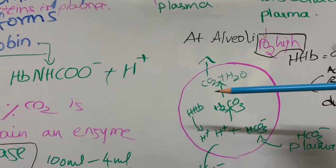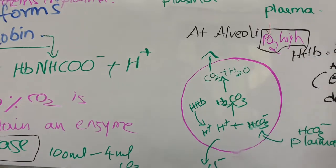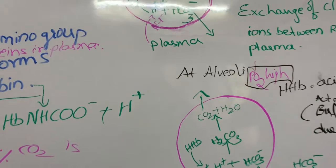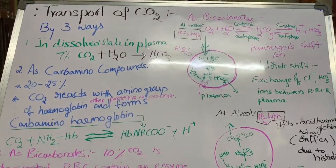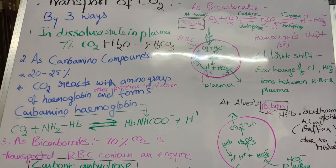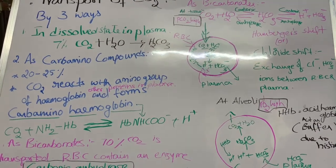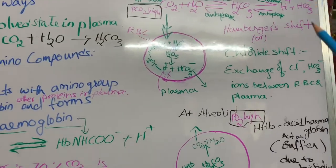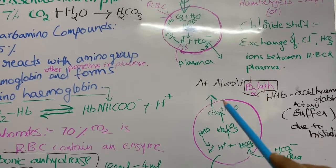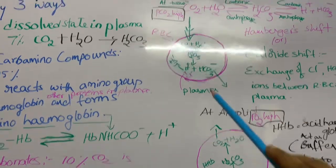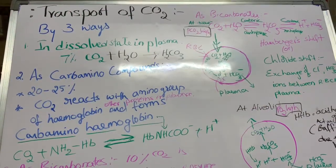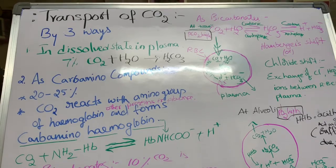As the partial pressure of carbon dioxide is very low at the alveoli, the carbon dioxide moves out from the RBC. This is how carbon dioxide is transported from tissues to alveoli, and from the alveoli it is expelled outside. Key points to remember: the enzyme carbonic anhydrase, the chloride shift, and the reversible reactions occurring at the tissue level and at the alveolar level. Thank you for listening. Please subscribe and hit the bell icon.